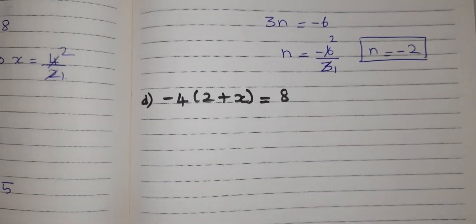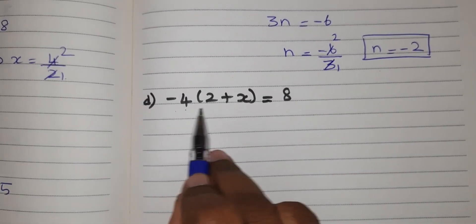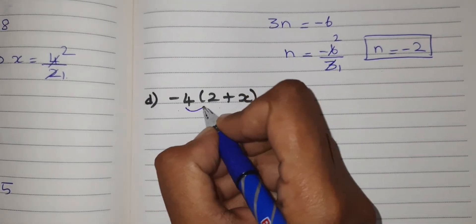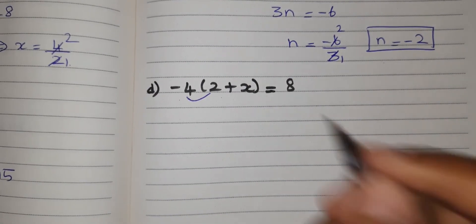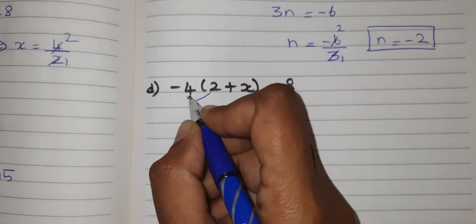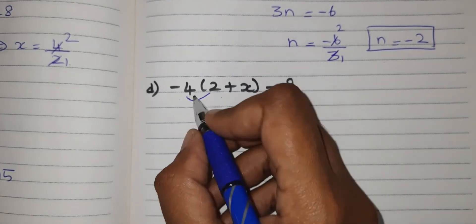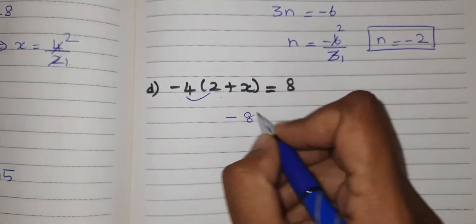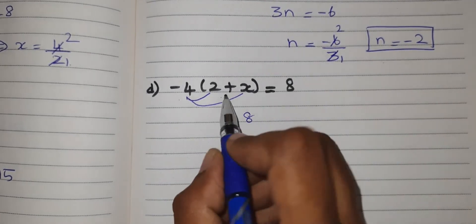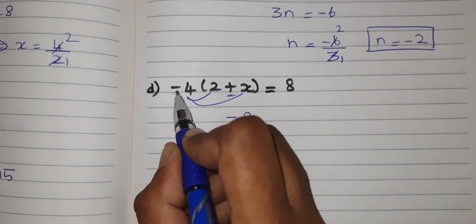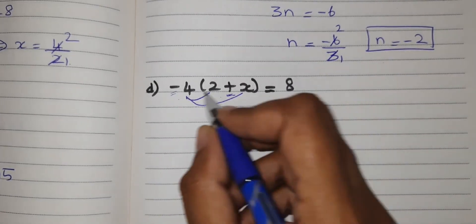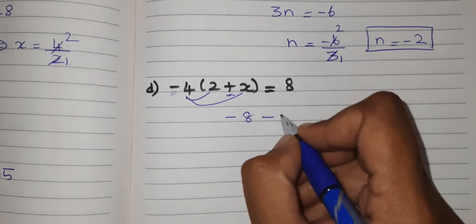Next, fourth problem: minus 4 into (2 plus x) equal to 8. First, multiply minus 4 into 2. Minus into plus is minus — 4 into 2 is 8, so minus 8. Next, multiply minus 4 into x. The symbol here is plus, and we have minus, so plus into minus is minus — giving minus 4x. So we have minus 8 minus 4x equal to 8.